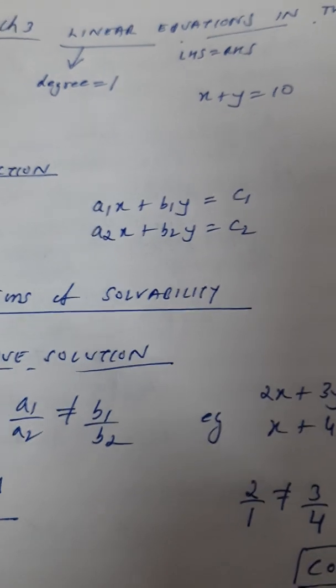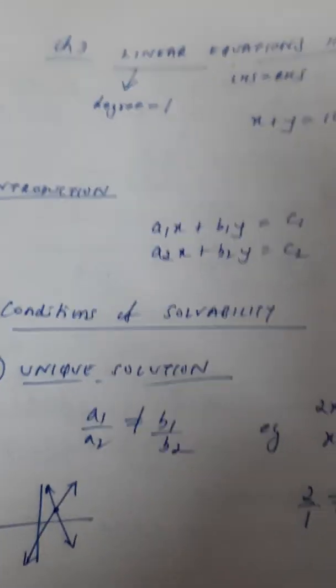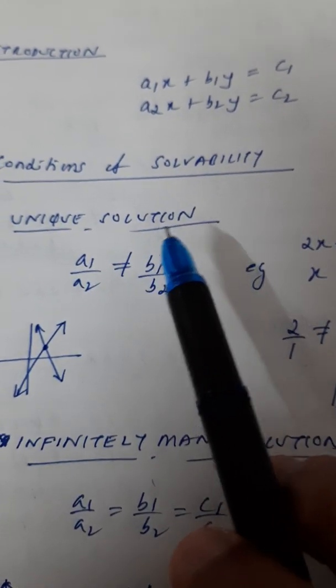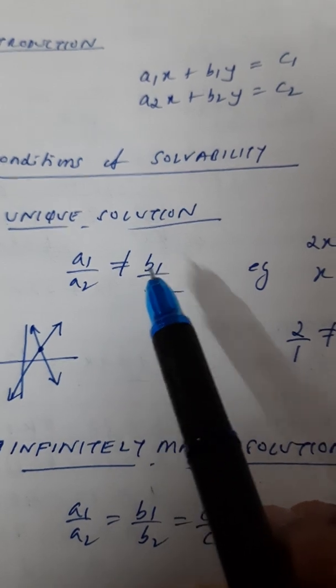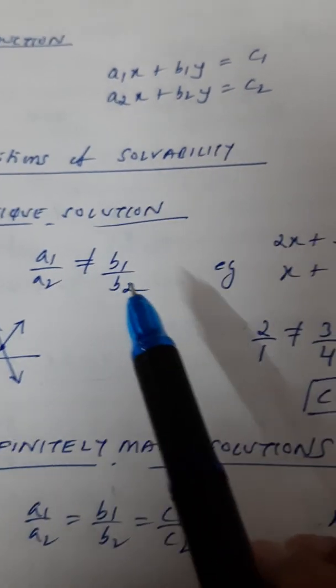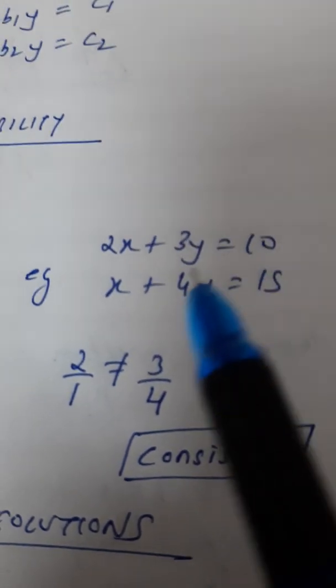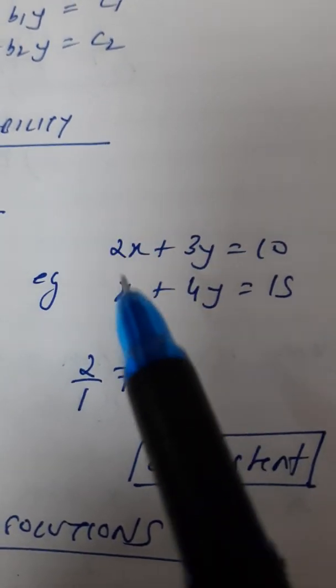Now, please remember when you are trying to solve linear equation in two variables, there can be three cases. The first case is called a unique solution. A unique solution occurs when A1 by A2 is not equal to B1 by B2. Now, what is the meaning of this? Let's say you are given this question. 2X plus 3Y is 10 and X plus 4Y is 15. And you have to solve this.